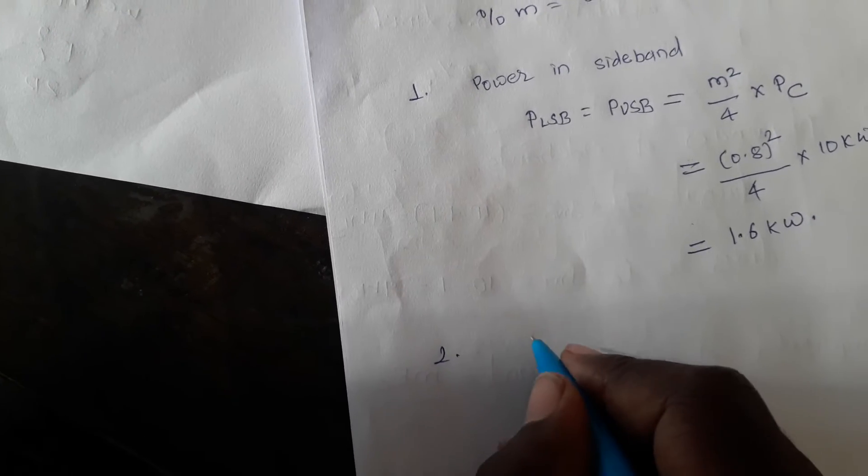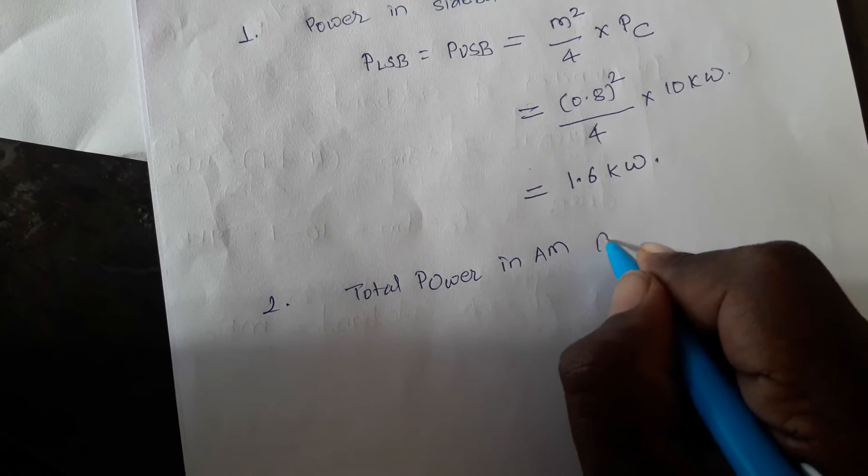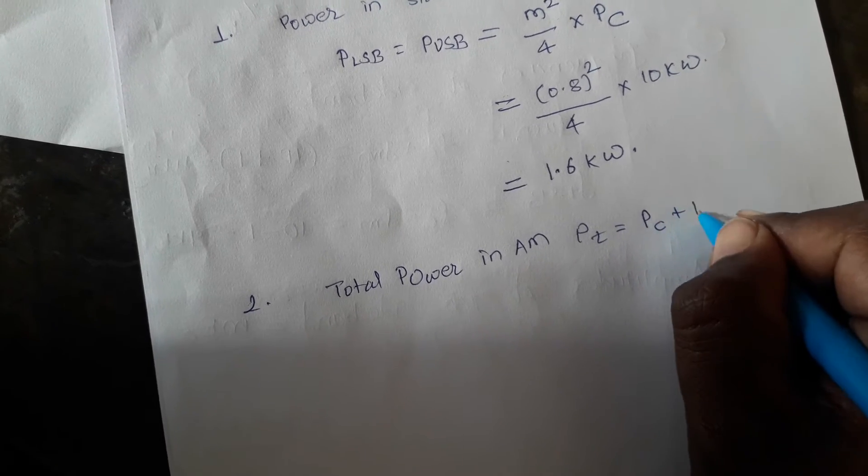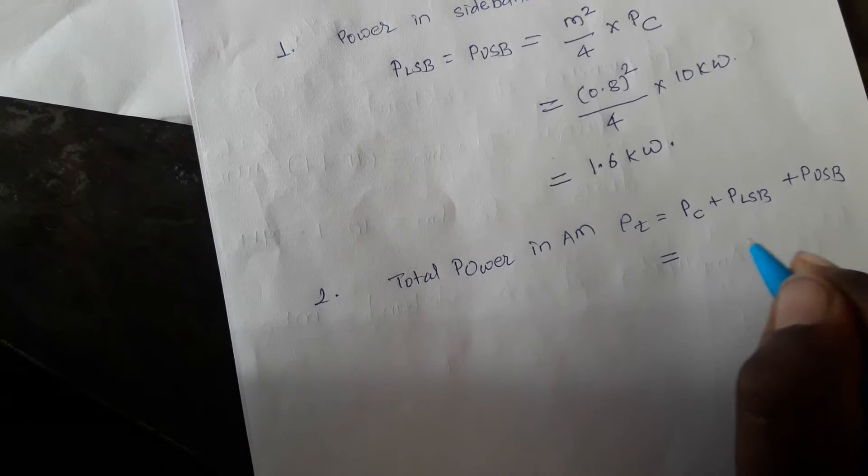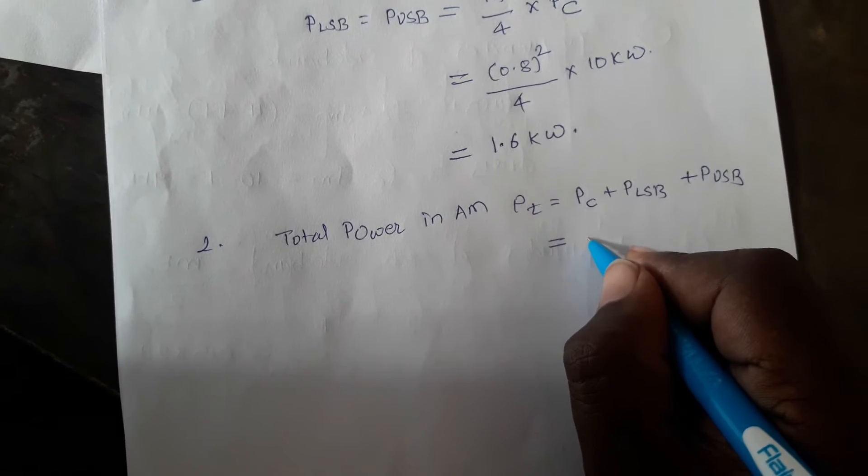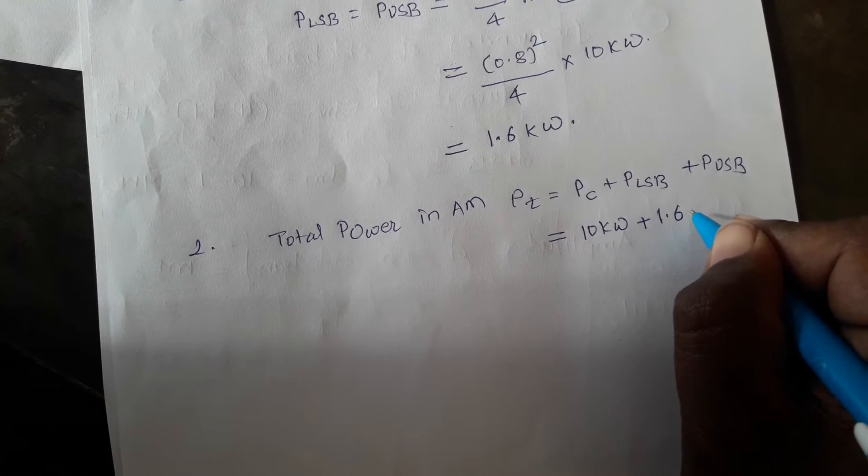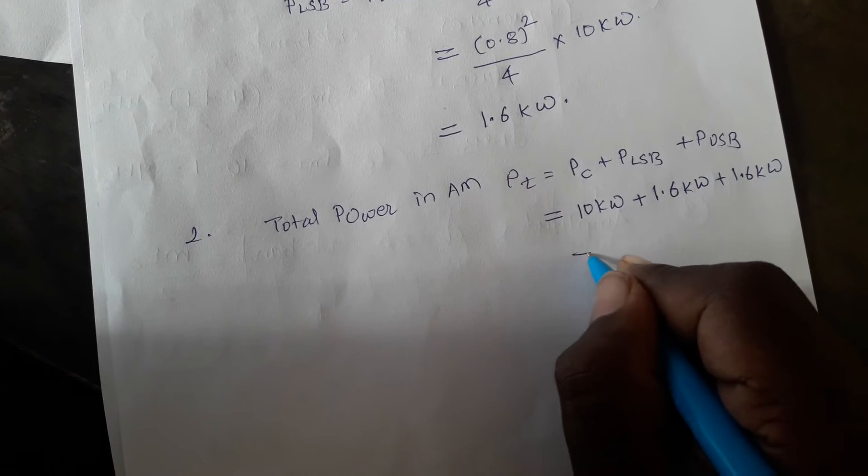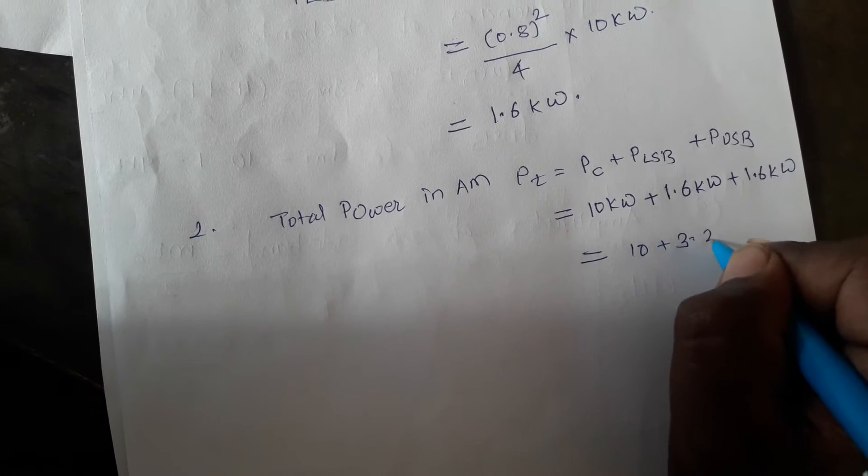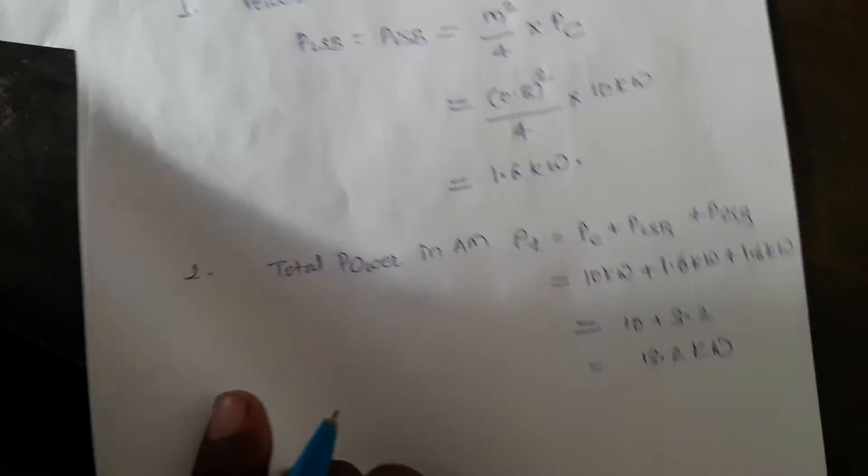Secondly, the total power in AM. Total power PT equals PC plus PLSB plus PUSB. Power of carrier is 10 kW as given. PLSB is 1.6 kW and PUSB is also 1.6 kW. So the total power, 10 plus 3.2, equals 13.2 kW.